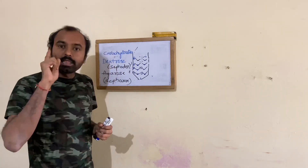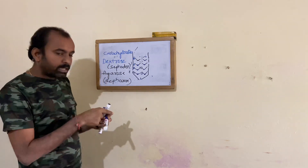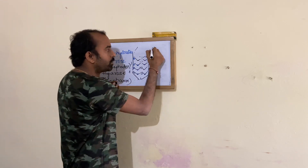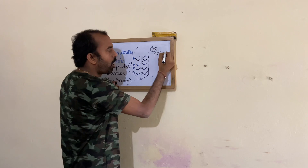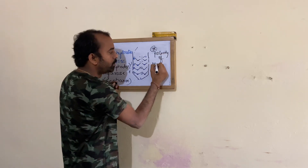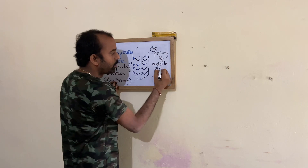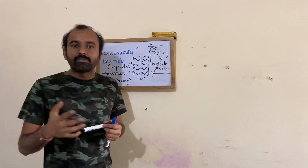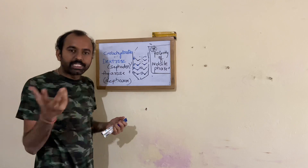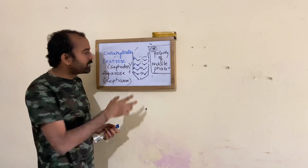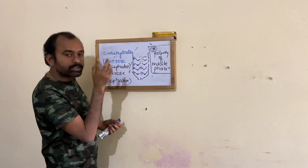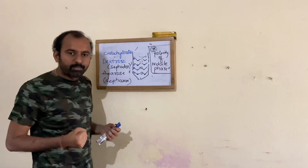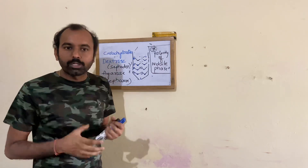When you pack the column with the stationary phase, you pass the mobile phase for a certain time so that the gel swells. The gelling time of the solution should be given and an appropriate mobile phase should be passed through. One important fundamental: the polarity of the mobile phase should not be changed, because if you change it, the imbibition changes and the pore size changes.